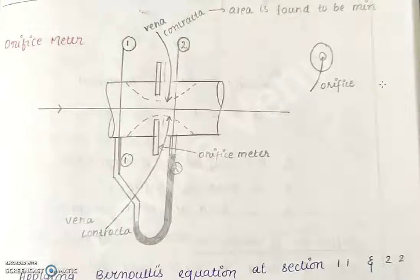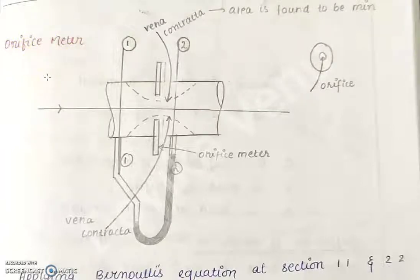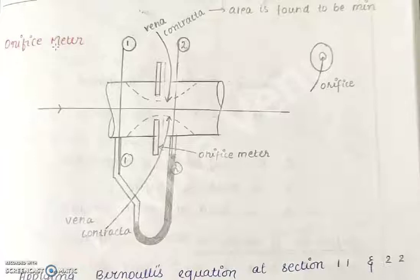Hello students. Next we will see the orifice meter. This device has the same principle as that of the venturi meter — it is a practical application of Bernoulli's equation — and this device is used to measure the discharge or the rate of flow of a fluid flowing through a pipe. This figure shows the orifice meter.